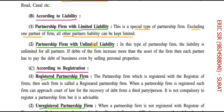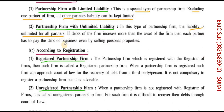The second type under liability is a partnership firm with unlimited liability. In this, all partners have unlimited liability. If the debts of the firm exceed the assets of the firm, then each partner has to pay the debts of the business even by selling their personal properties.